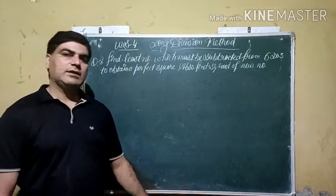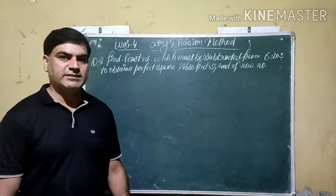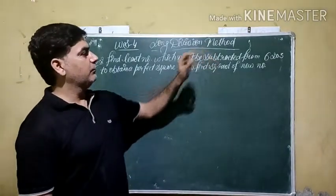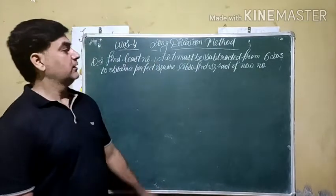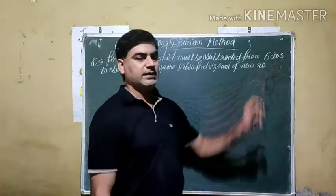In prime factorization method we have done what should be multiplied or divided to make the given number a perfect square. In long division method we are going to do what should be added or subtracted to make the given number a perfect square.